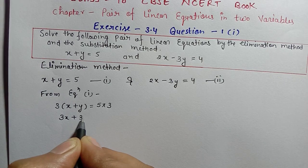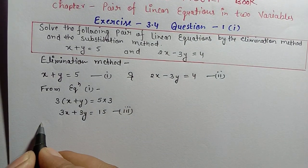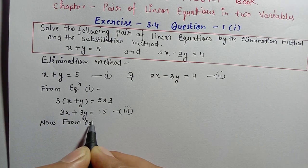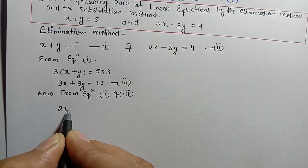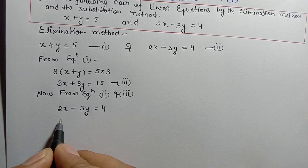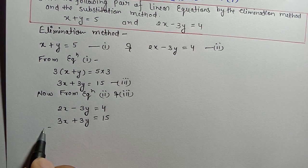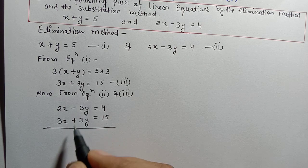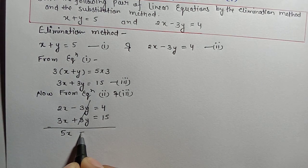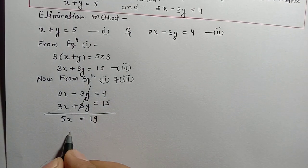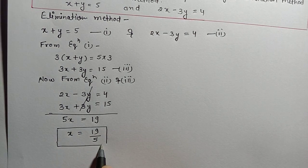We now have equation 2: 2x minus 3y equals 4, and equation 3: 3x plus 3y equals 15. Adding equations 2 and 3, the negative 3y and positive 3y eliminate each other. We get 2x plus 3x equals 5x, and 4 plus 15 equals 19. So 5x equals 19, giving x equals 19 by 5.